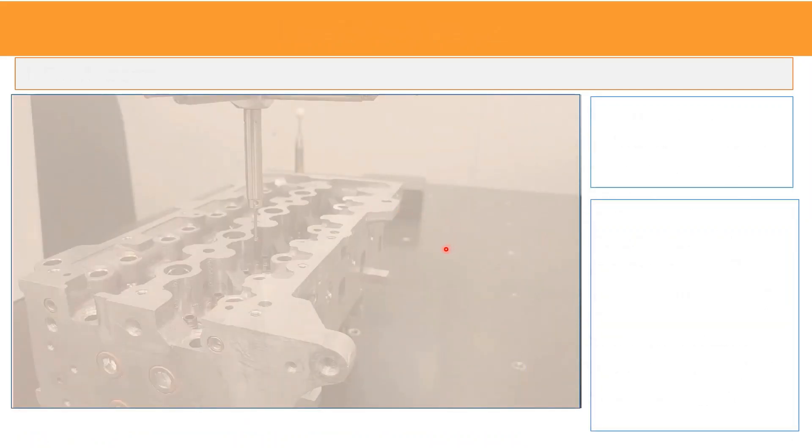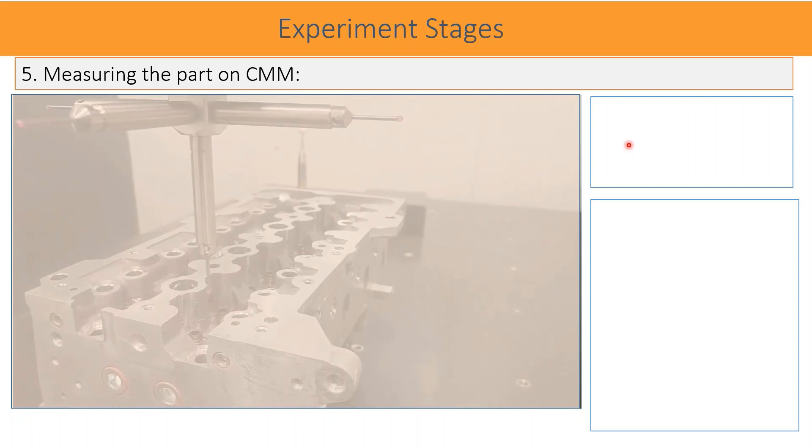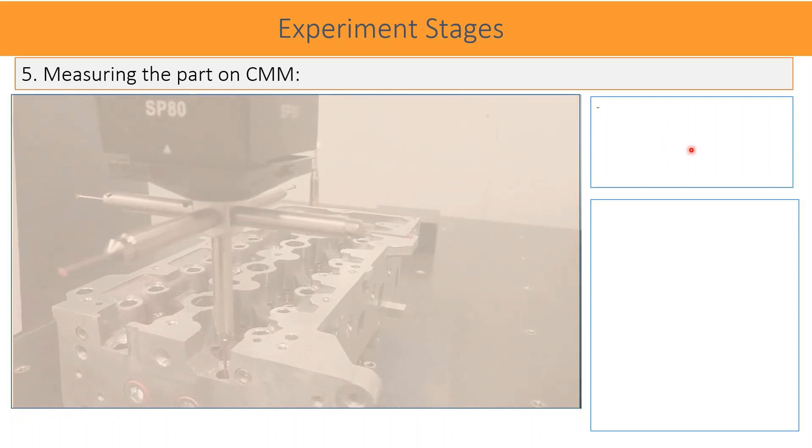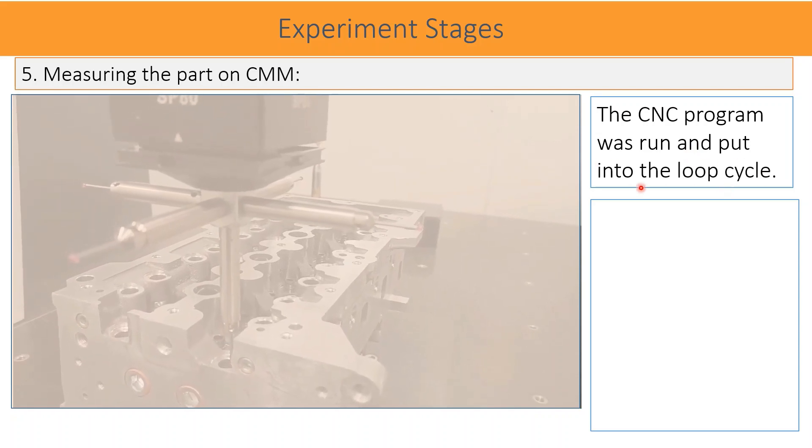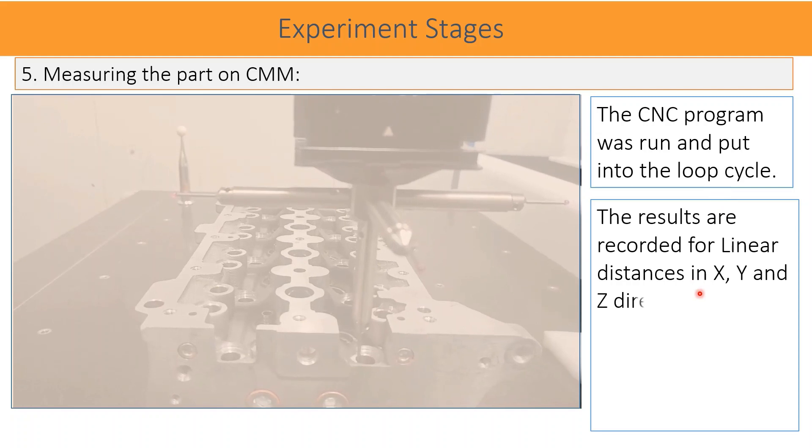Measuring the part on CMM. The CNC program was run and put into the continuous loop cycle to repeat the measurements. The results are recorded for linear and angular sizes in X, Y, and Z direction.